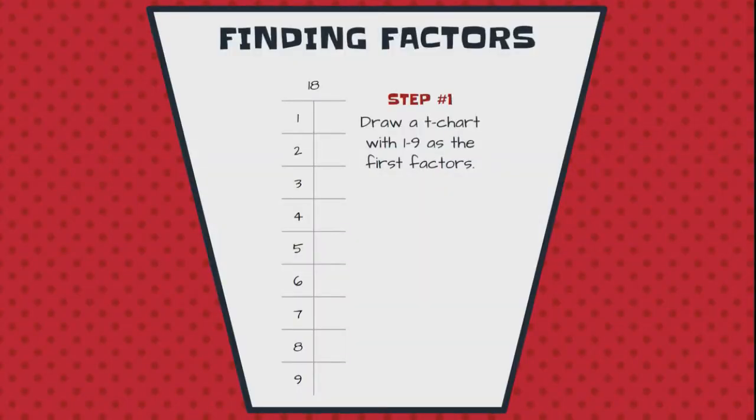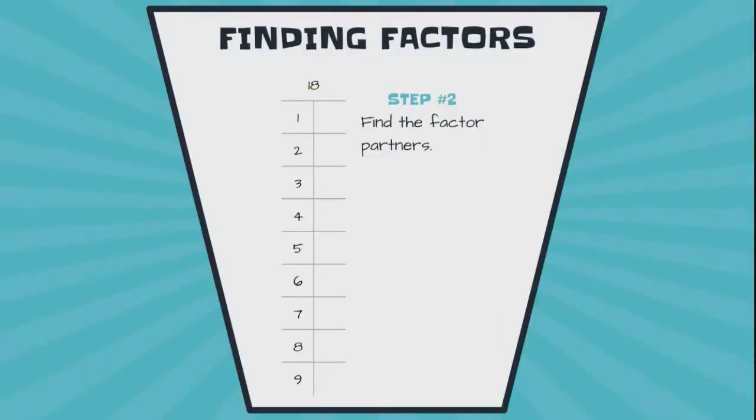So, finding factors, here's what I do. Step one, draw a t-chart with one through nine as the first factors. All in order, one through nine. Step two, we're going to find the partners of these numbers, one through nine, if they exist.